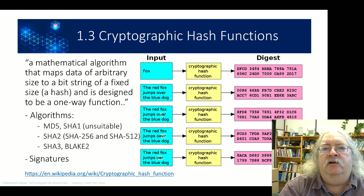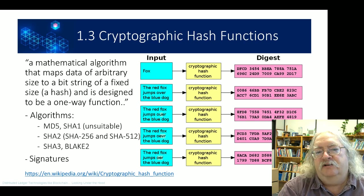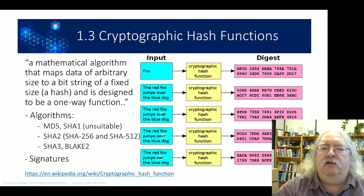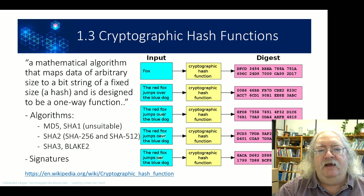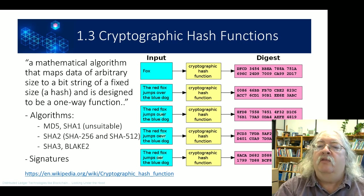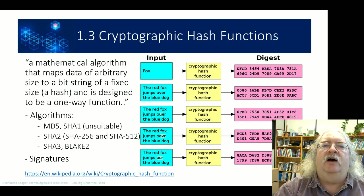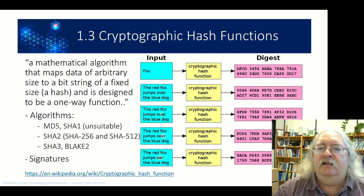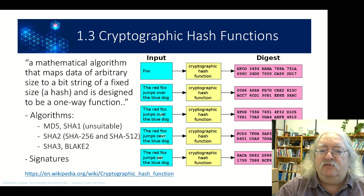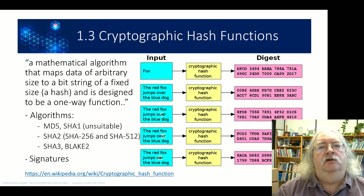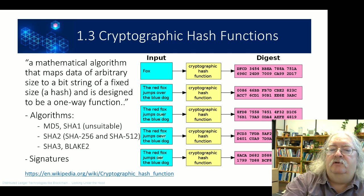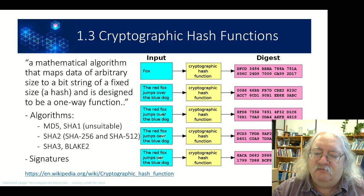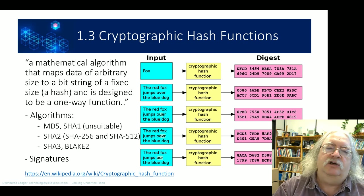Another major underlying function is the cryptographic hash function. This is a mathematical algorithm that takes some arbitrary string data as input — for example, 'the red fox jumps over the blue dog' — and produces what's called a digest, also called a hash. The hash function is a one-way function: when you put the text in and produce the hash, you can't go from the hash back to producing the text. That makes the text corresponding to a hash hard to find.